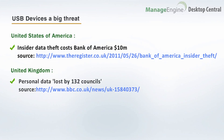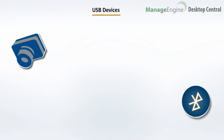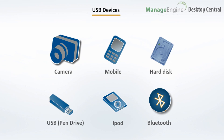Securing corporate data has been a challenging task for system administrators. The main source of data theft are USB devices — such as USB pen drives, iPods, digital cameras, mobile phones, external storage devices, and Bluetooth devices — which are a few of the main sources through which corporate data are stolen.